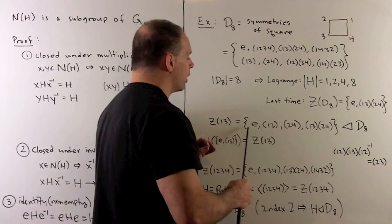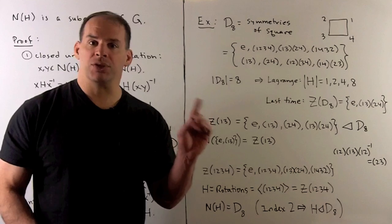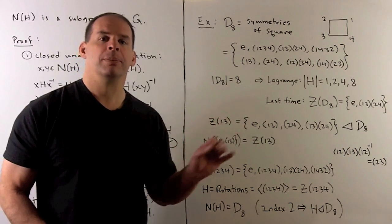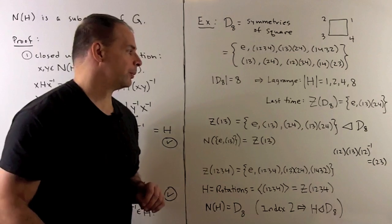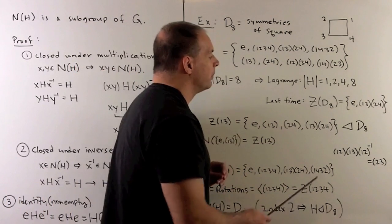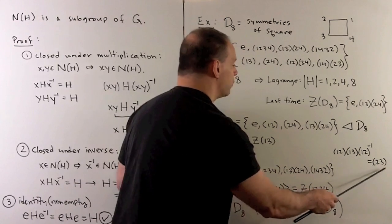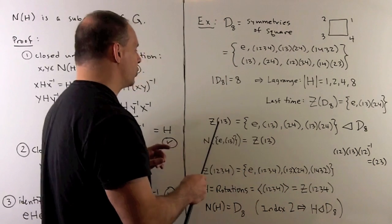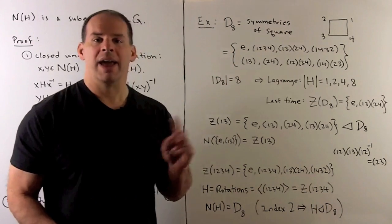Note, because the order of this subgroup is four, it's normal in D8 by the index two theorem. The index here, number of cosets, is eight over four equals two. For this fact, we could check directly also. If we conjugate (1,3) by (1,2), we get (2,3), and that shows if we conjugate, we're not getting (1,3) back. So it has to be order four.